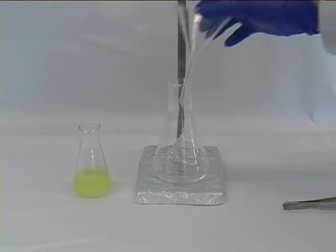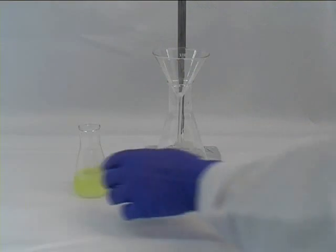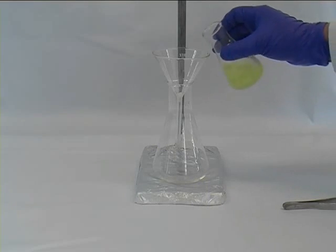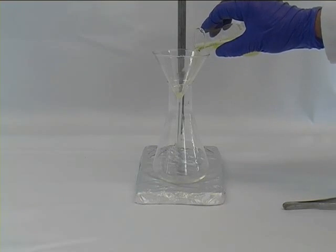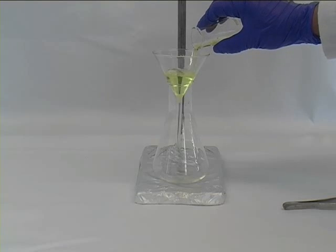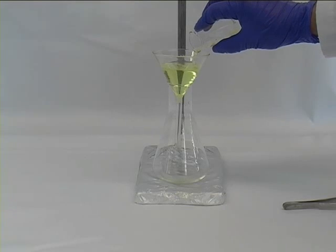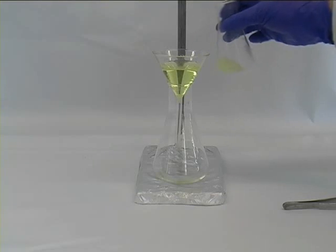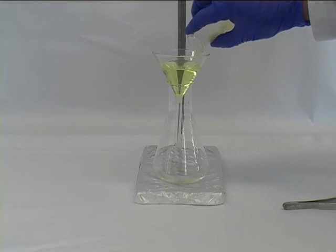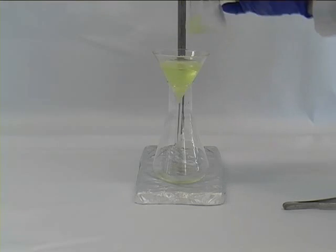Also you can plug the outlet of a standard funnel with some cotton wool and use that to filter your solution into a standard conical flask. This whole process affords also a yellow solution, however the whole process is much slower and it is sped up in this video.